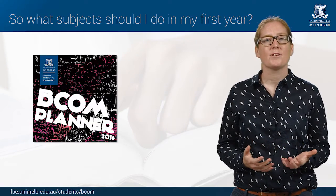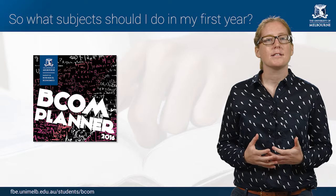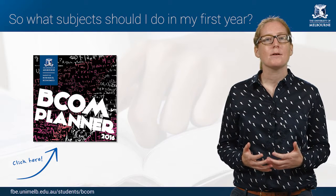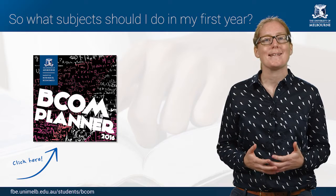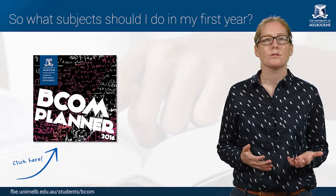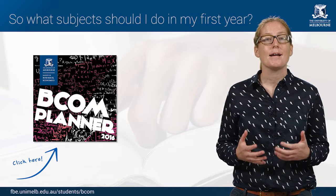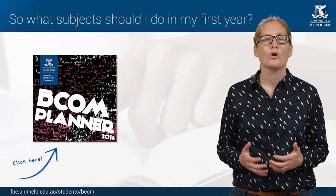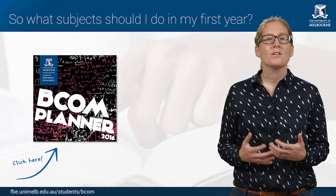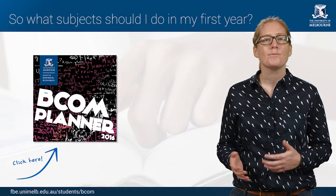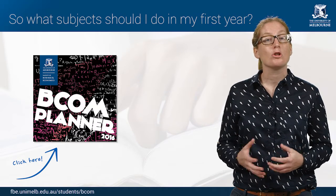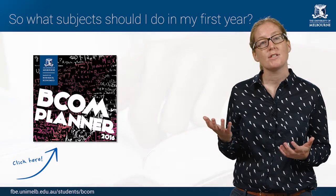Next you should add a commerce elective. If you have an idea of what major you would like to pursue, check the BCom planner and see which level one subjects you need to start that major. It's okay if you don't know which major you would like to do. The great thing about the BCom is that you get to try different level one subjects before you have to decide. With your last subject for your first semester you might want to add another commerce elective or a breadth subject. Not sure which one? Check out the university handbook.